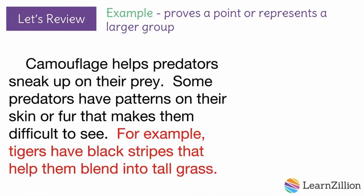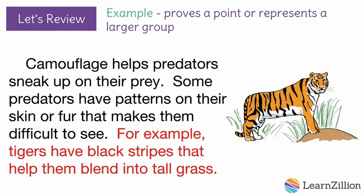Camouflage helps predators sneak up on their prey. Some predators have patterns on their skin or fur that makes them difficult to see. For example, tigers have black stripes that help them blend into tall grass. By giving an example, readers are able to see exactly what it is I'm talking about. Examples help us prove our ideas or clarify information for our readers. In this text, my example of the tiger helped me prove the idea that camouflage helps predators sneak up on their prey.